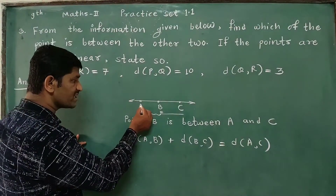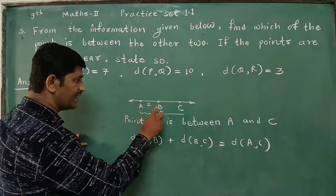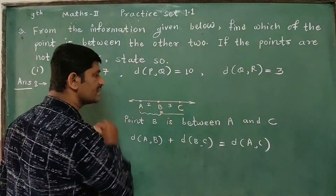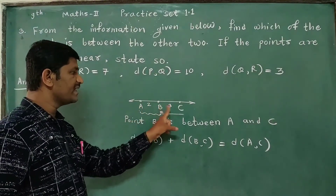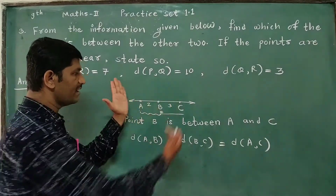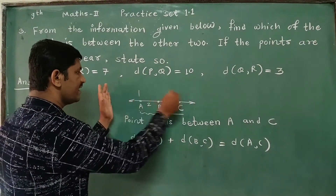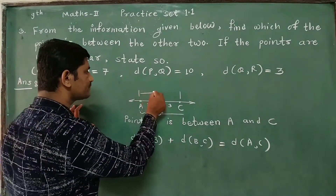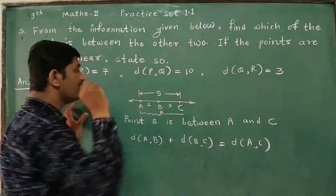Suppose the distance between Point A and B is 2, and the distance between Point B and C is 3. If AB is 2 and BC is 3, then the distance between Point A and C is 2 plus 3, which is 5.